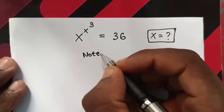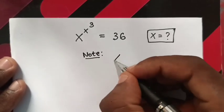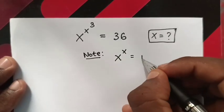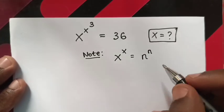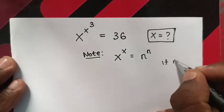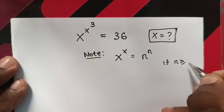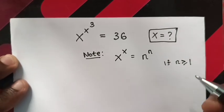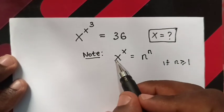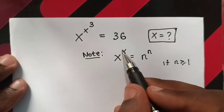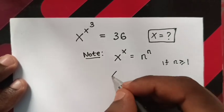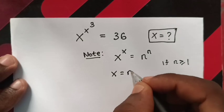First, we should note that x^x = n^n if n is greater than or equal to 1. Therefore, the base x equals n and the power x equals n, so x equals n.